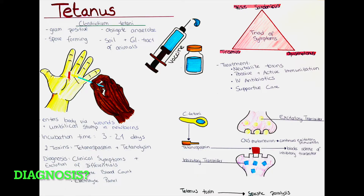How can we diagnose tetanus? Diagnosis of tetanus is primarily based on clinical symptoms, even though wound cultures can potentially identify the bacteria. Laboratory tests are not routinely done for confirming tetanus; they are however sometimes used to exclude other potential causes of tetanus-like symptoms. These tests might include a complete blood count to check for signs of infection or inflammation, an electrolyte panel to assess electrolyte balance, and depending on the specific circumstances, additional tests such as cultures of the wound or cerebrospinal fluid analysis.